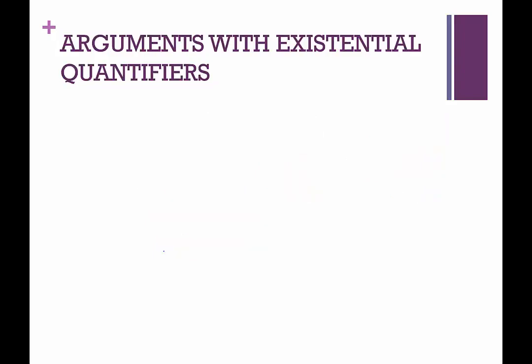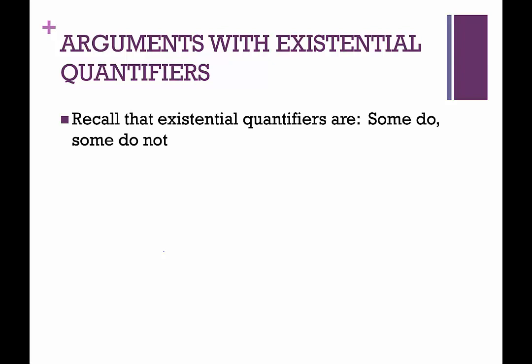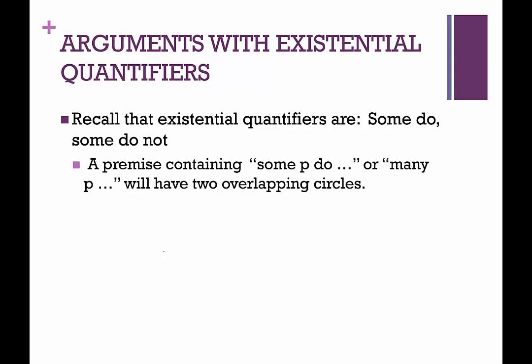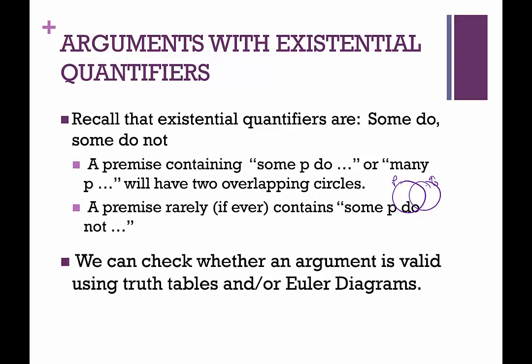Now let's review our existential quantifiers. Recall that existential quantifiers are some do, some do not. A premise containing some P do, or many P do, will have two overlapping circles. So, we would have one representing P, and then we would have one representing whatever they do, which we'll use Q for that. So, if many of them do, there is going to be some overlap, but there's potentially also some P who do not too. So, we would have to have it just kind of like a regular Venn diagram. A premise rarely, if ever, contains some people do not, or something weird like that. We usually don't see the negative existential quantifiers here. Usually it's just many blah do blah. We can check whether an argument is valid using truth tables or Euler diagrams. So, let's check our existential quantifiers now.